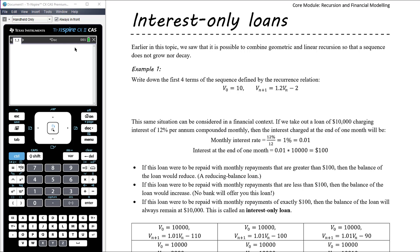In this video we want to introduce the concept of an interest-only loan. We've actually considered this concept in a slightly more abstract way already. What we saw earlier in this topic was that it's possible to combine geometric and linear growth or decay in a sequence so that the sequence doesn't actually grow or decay. We can be multiplying by a number and adding or subtracting a number in a particular combination so that the values of each term in the sequence remain the same.